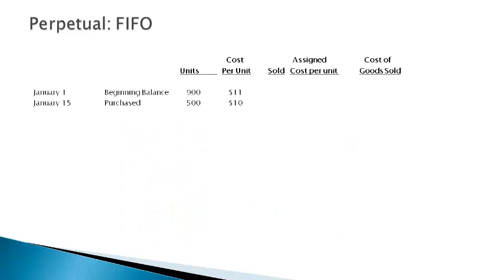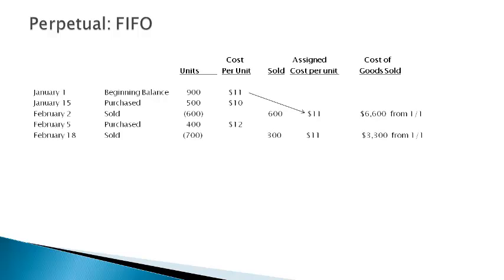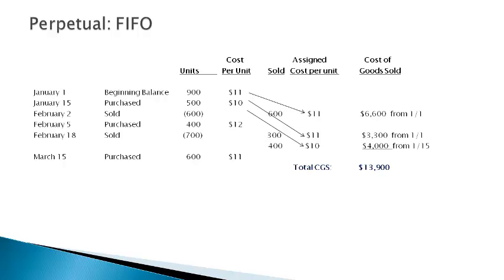Let's walk through an example of perpetual FIFO. The first step is to list the transactions down the left side along with the cost of beginning inventory and purchases. Then, out to the right, create a column for the units sold and the cost per unit that will be assigned to those units. The sale on February 2nd is assigned the cost from beginning inventory — the first cost. The next purchase occurs and the sale on February 18th is assigned the cost of the rest of the beginning inventory units — the first ones in — and the rest of the sale is assigned the cost from the first purchase. The total cost of sales is reported on the income statement at $13,900, the cost of the first ones purchased before the date of each sale.